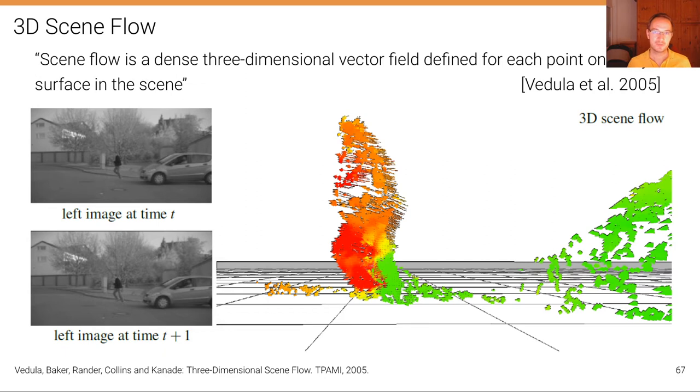In other words, we want to measure for every visible point in the scene the 3D location of that point and the 3D velocity where that point is moving in 3D space.